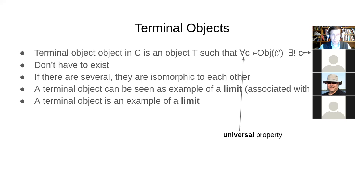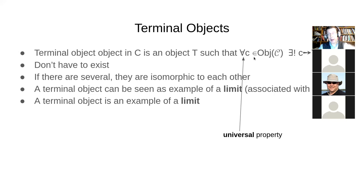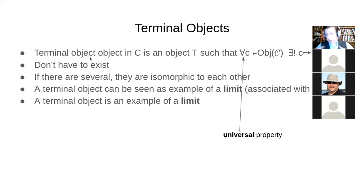Just as a reminder, there were three types of things talked about. One was a terminal object — this is a universal construction defined using a universal property. A terminal object T in a category C is an object such that for any other object in the category, there exists a unique morphism — not just any morphism, a unique one — from that other object to T. So it's an object pointed to by every other object with exactly one morphism possible.